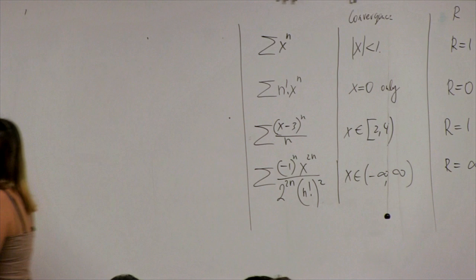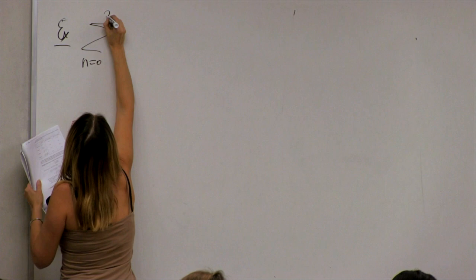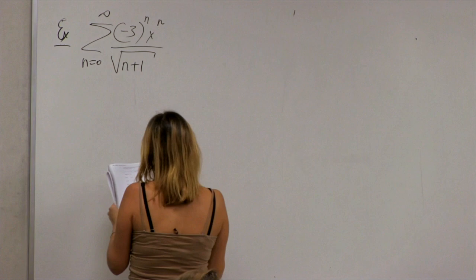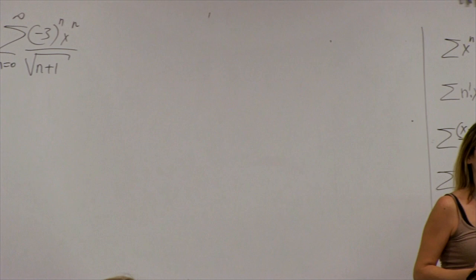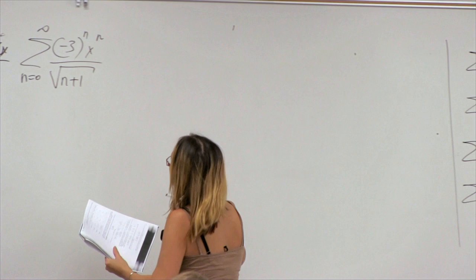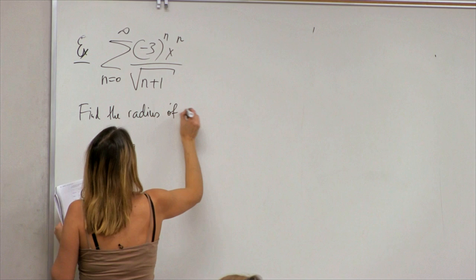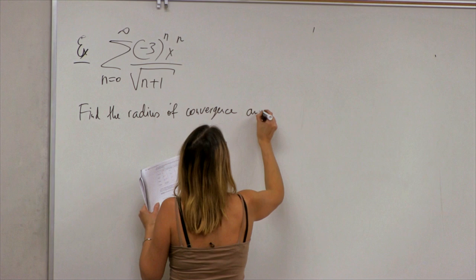Let's look at a couple of examples. We have the sum from 0 to infinity of (−3)^n · x^n divided by square root of (n+1). The question is to find the radius of convergence and the interval of convergence.